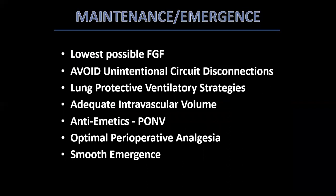As far as maintenance is concerned, the lowest possible fresh gas flows should be used to reduce contamination. We must endeavor to avoid unintentional circuit disconnections, and if intentional disconnection is needed, it is best to clamp the endotracheal tube with forceps. Lung protective ventilator strategies must be adopted in symptomatic patients with bilateral ground glass peripheral infiltrates on HRCT, to avoid volutrauma, barotrauma, and biotrauma. Intravascular volume must be adequate, especially in sicker patients prone to developing acute kidney injury. Anti-emetics, optimal analgesia, and smooth emergence go hand in hand.